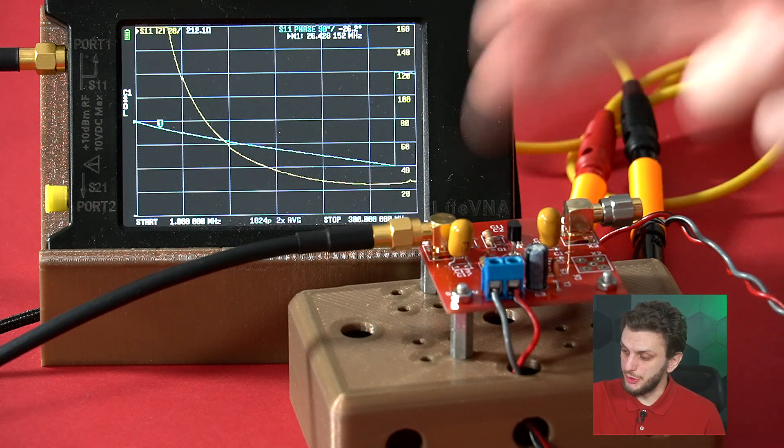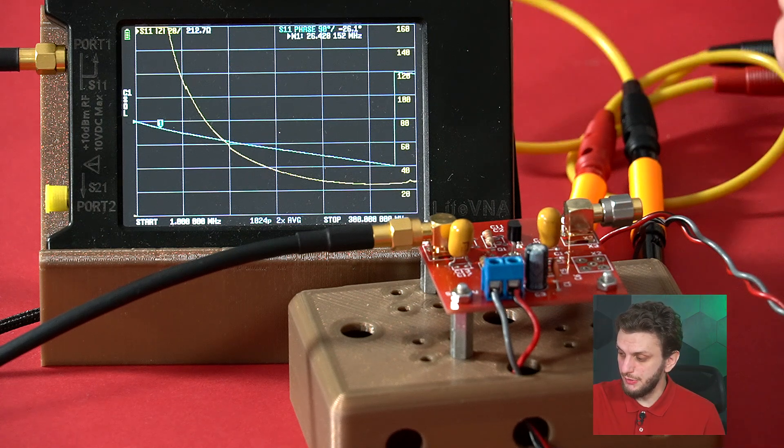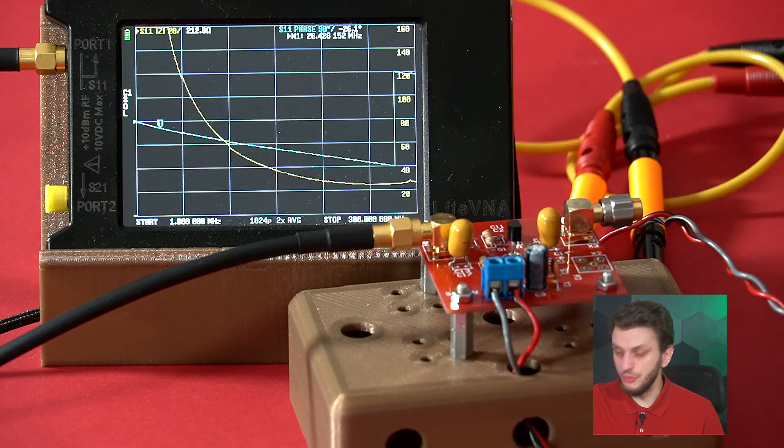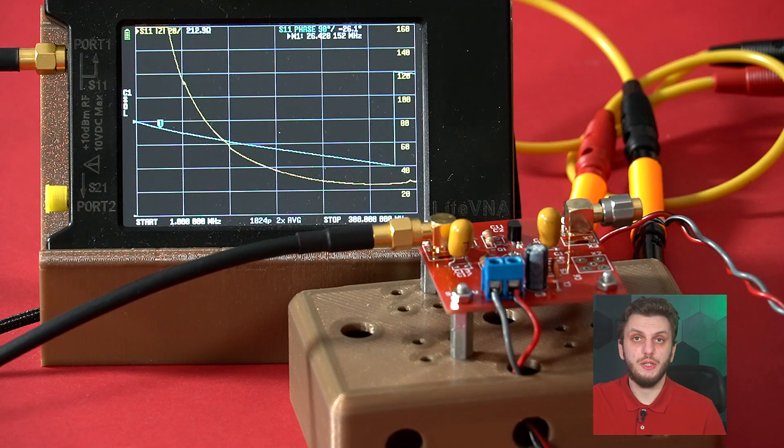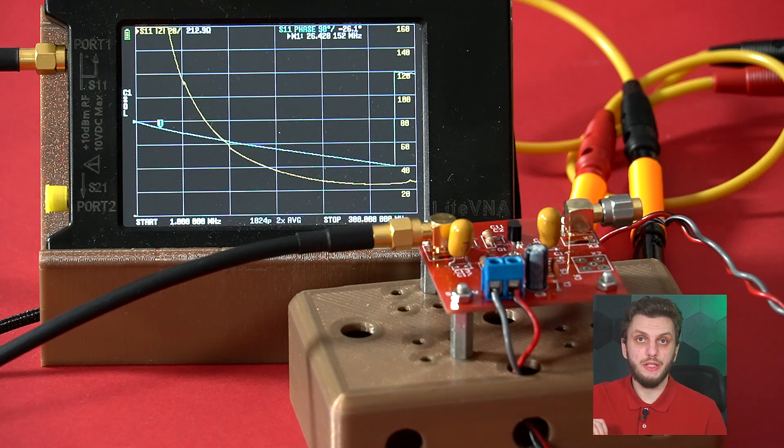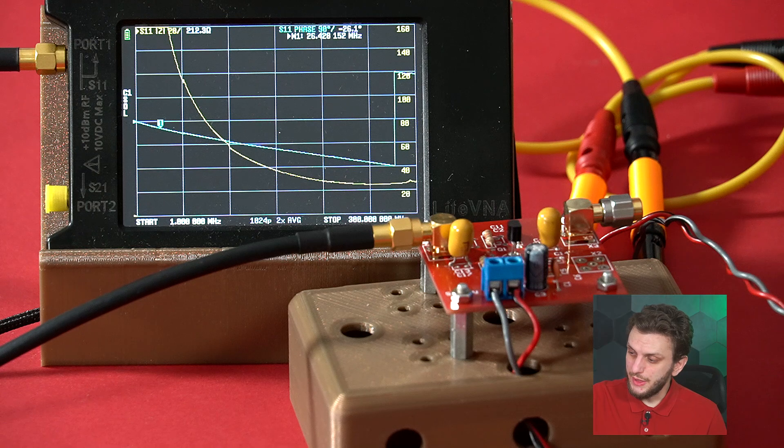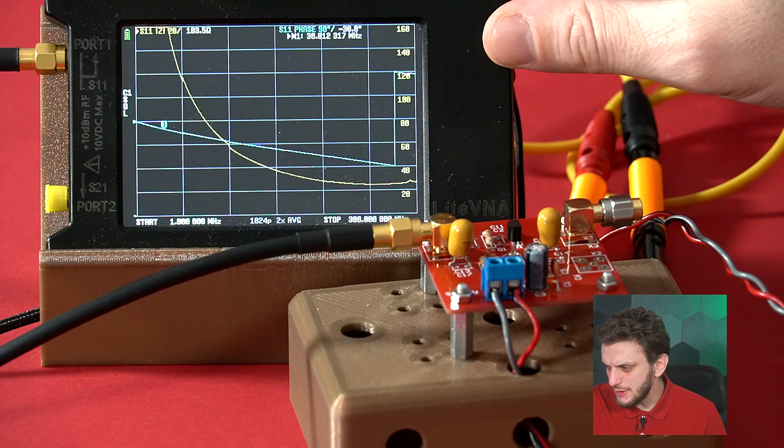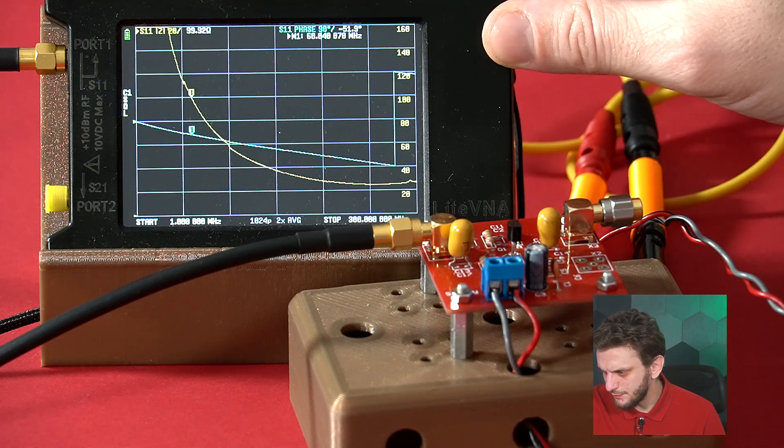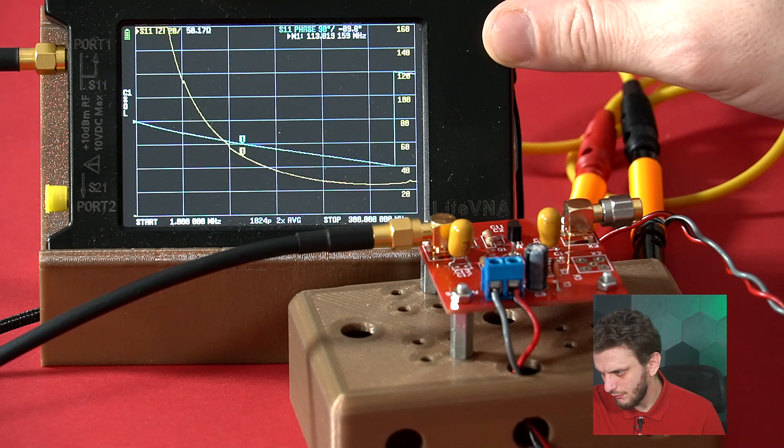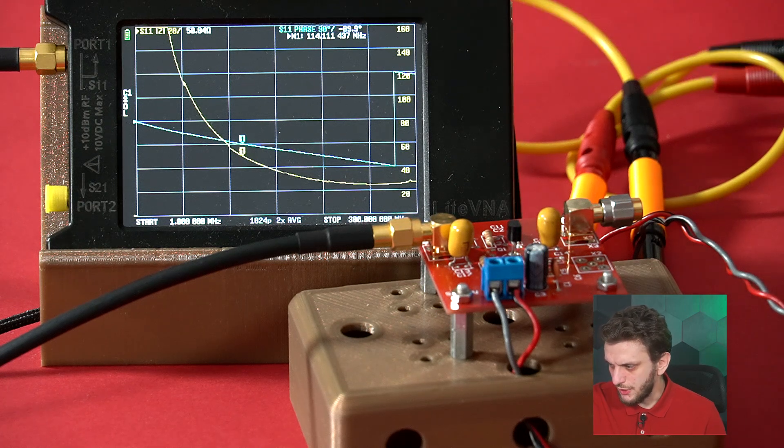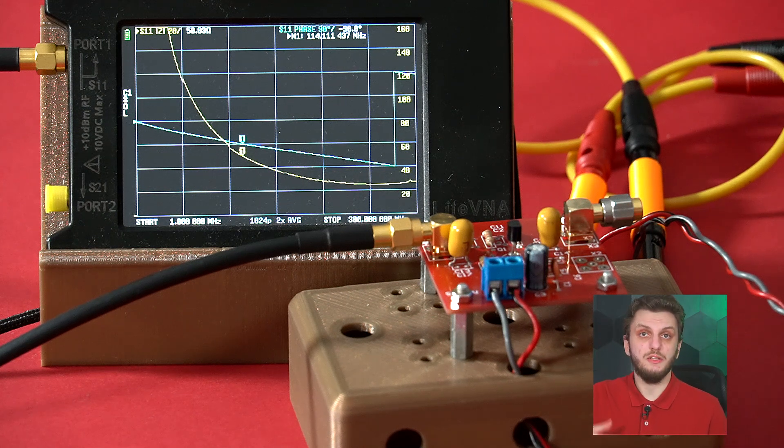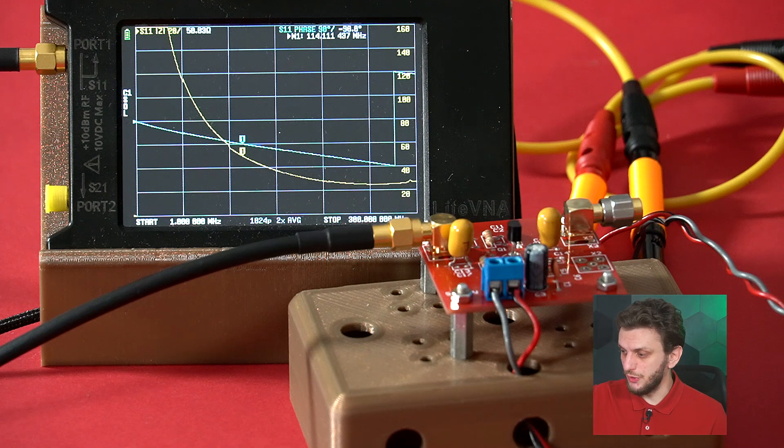I put back the setup to measure the input side impedance of the amplifier with 50 ohms on the output, and I change the scale of the device to go up to 300 megahertz. We can figure out the unity power gain point at the frequency at which the input impedance reaches 50 ohms. If we do this and we go through the points, we can see we're at 50.05 at 114 megahertz. We can say that this amplifier has a power gain of 1 at 114 megahertz.